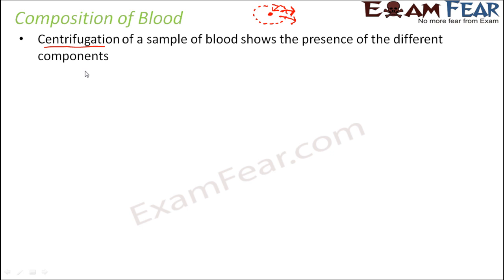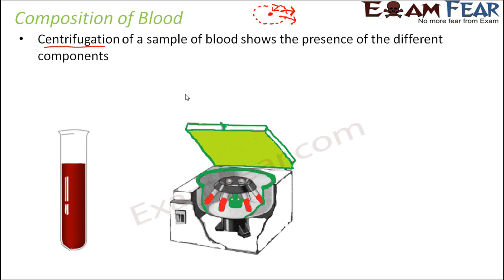When you take a sample of blood and rotate it at a very high speed, the denser particles of the blood tend to get deposited at the lower end of the test tube, whereas the lighter particles tend to come towards the upper side. If you place blood in a centrifuge and rotate it at very high speed, the different components of the blood get segregated.